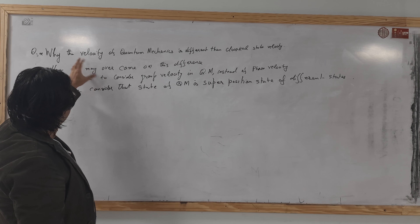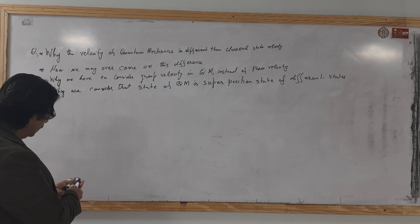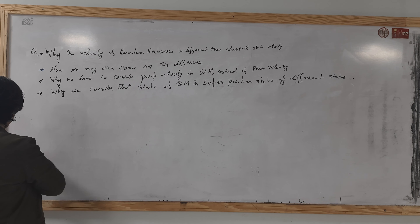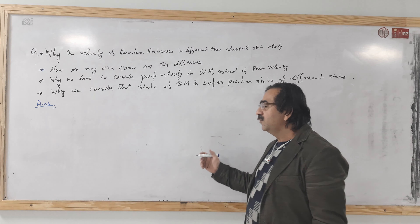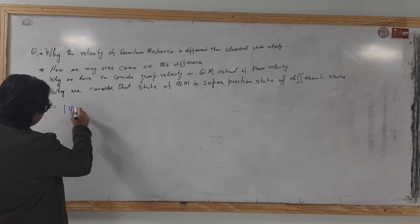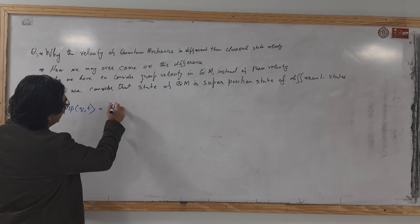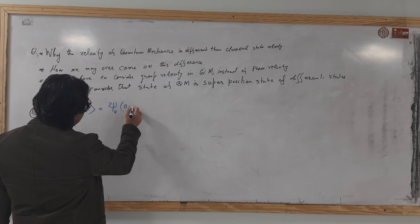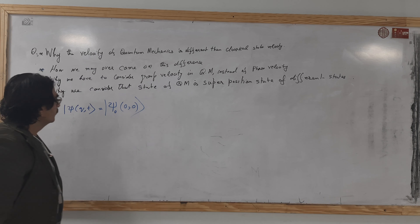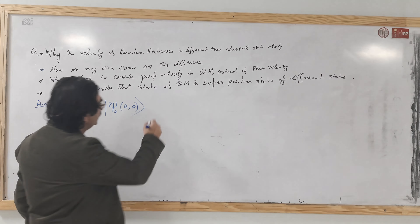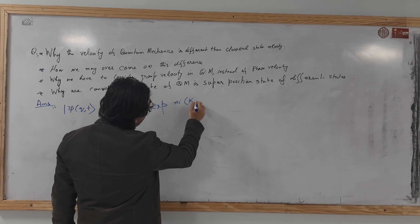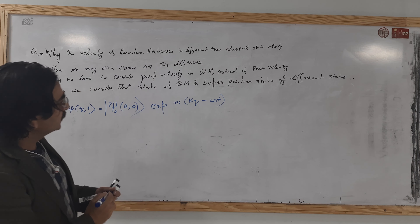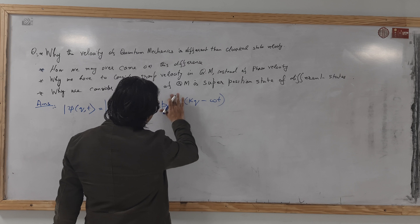As I have already discussed, these questions are related to the same problem, so we will try to find the answer of these questions. As we have already proved, the solution of Schrodinger wave equation — time dependent and independent — my last two lectures was about this. That psi(q,t) will be psi-naught at initial time, and that will be exponential of i times (kq minus omega t). We have found this expression — the solution of Schrodinger wave equation is this.